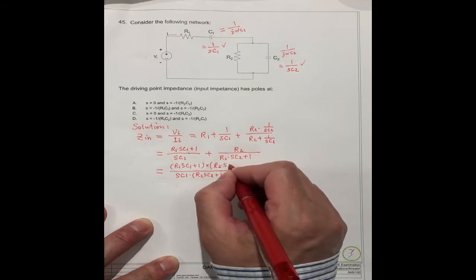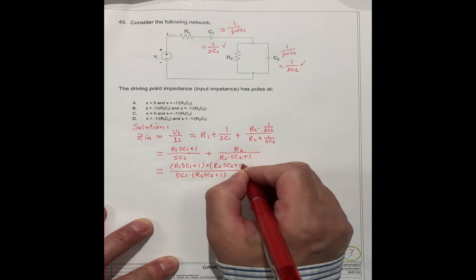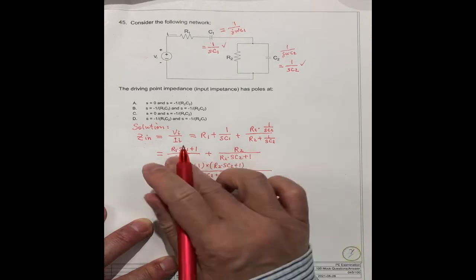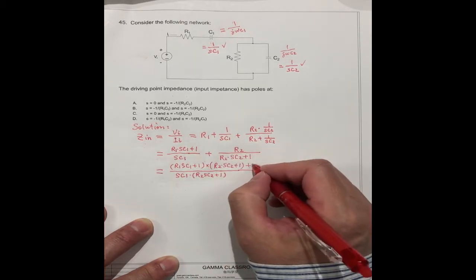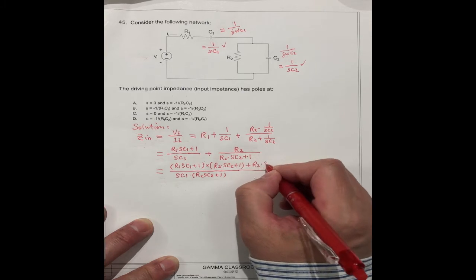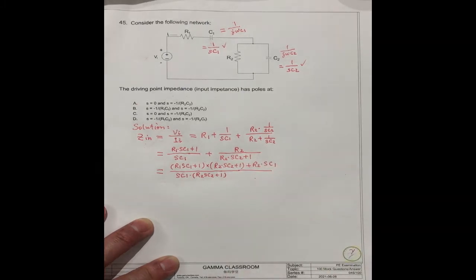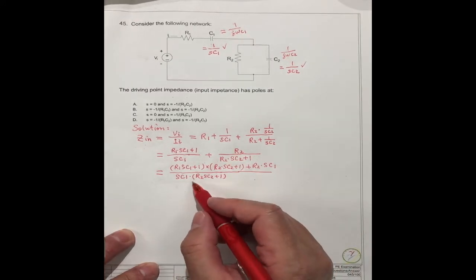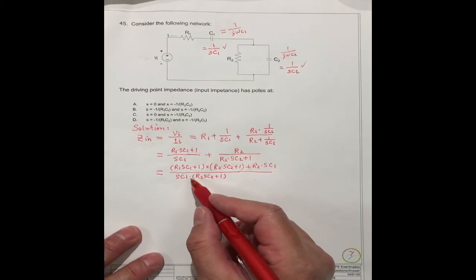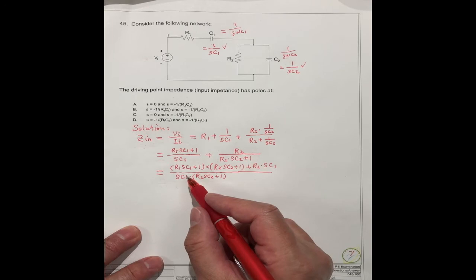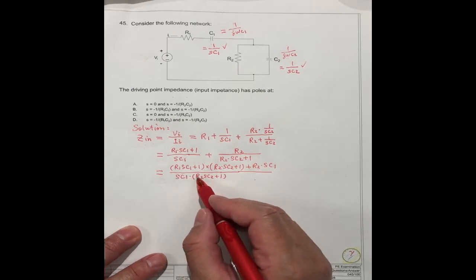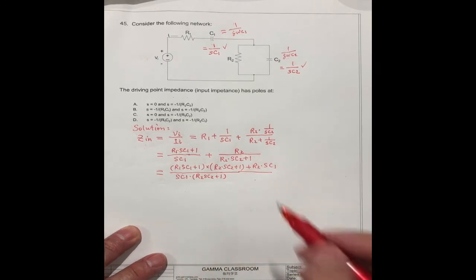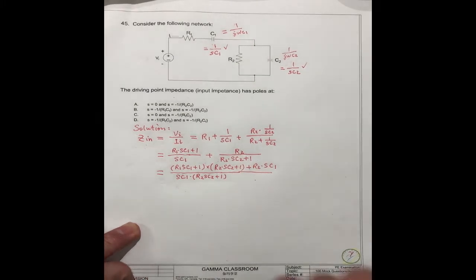R2C2 plus 1, and this is R1·SC1, this becomes R2·SC1.